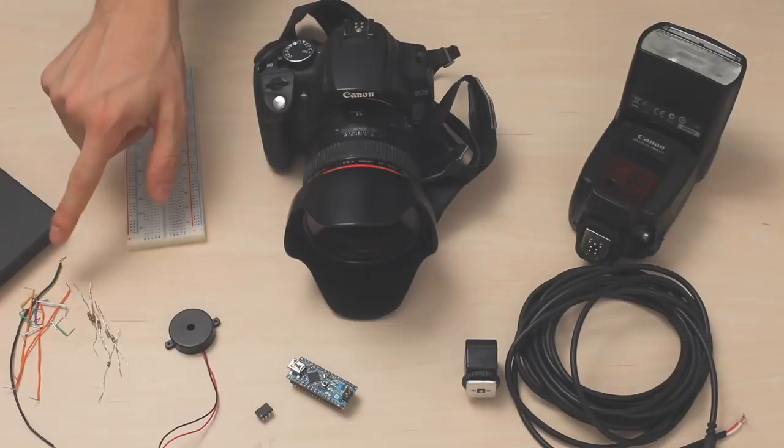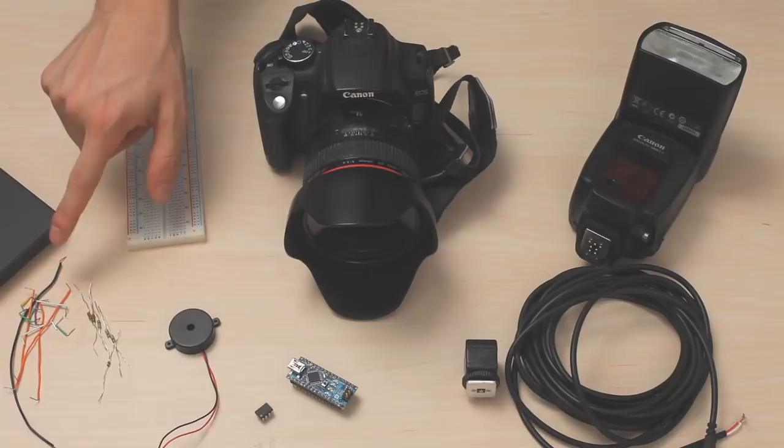First, let's talk about opto-isolators. We can learn a lot about them by looking at the schematic diagram. On one side, we have an LED. On the other, a photo transistor.